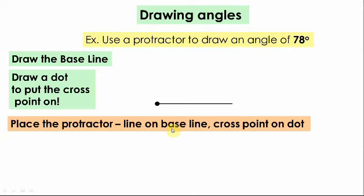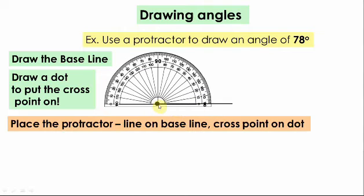Then place the protractor line on the baseline, cross point on the dot by this way. This is the center of the protractor and this is the zero line.